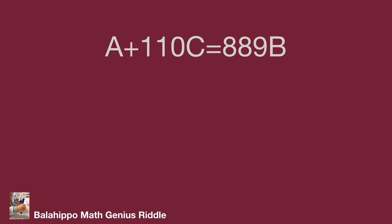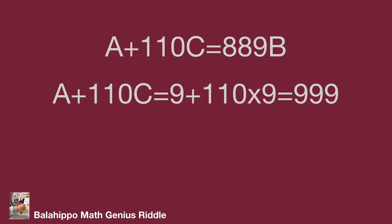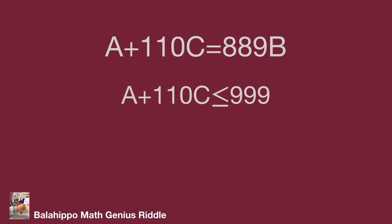Next, to search the value range of A plus 110C: if A equals 9 and C equals 9, then A plus 110C equals 9 plus 110 times 9, which equals 999. So we can say A plus 110C is less than or equal to 999. Since A plus 110C equals 889B, the value of B could be 0 or 1, and B cannot equal 0, so B equals 1.